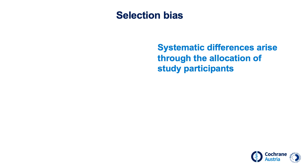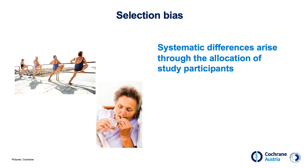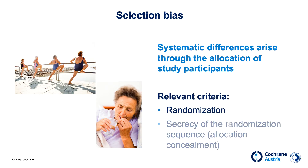Selection bias describes the problem that there are systematic differences in the allocation of study participants. Imagine a study examining the effects of a physical exercise program versus no intervention, where study participants choose which group they go into. It is very likely that more sports enthusiasts and health-conscious people opt for the sports group, forming two groups that are not comparable from the start. If at the end of the study the sports group had better results, this could not be automatically assigned to the intervention. Selection bias can be avoided by randomization and allocation concealment.